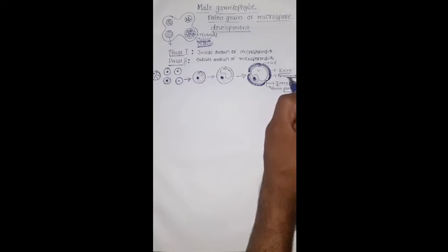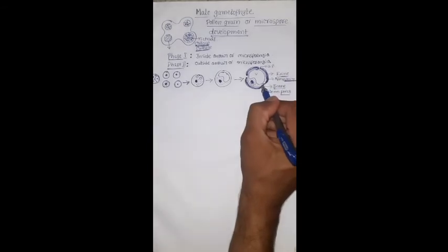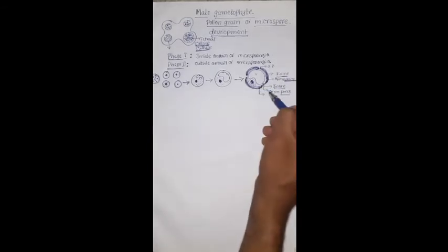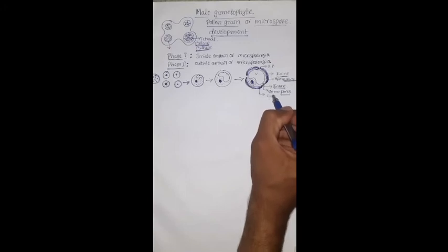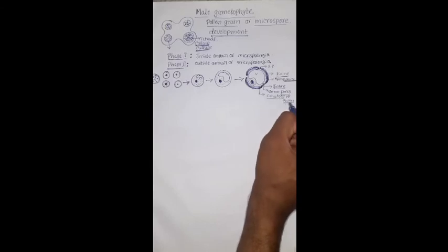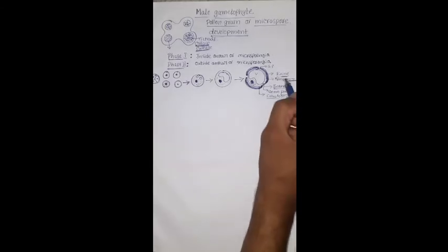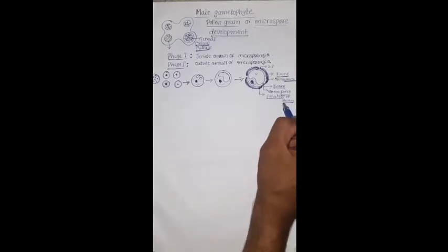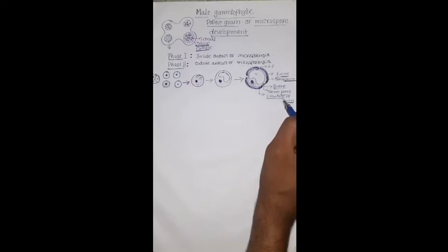The inside wall, the intine, is very thin. It is made up of either cellulose or pectin. When compared with exine, it is very thin and very flexible.